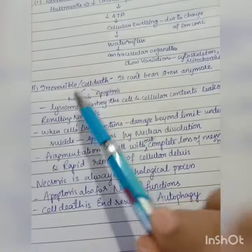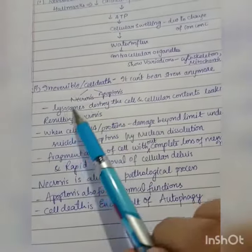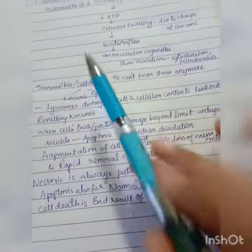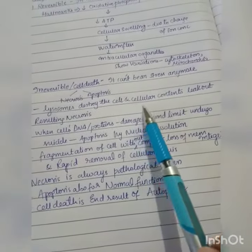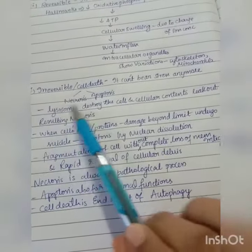It is divided into necrosis and apoptosis. Necrosis is like murder and apoptosis is like suicide. Lysosomes destroy the cell and cellular contents leak out, resulting in necrosis.